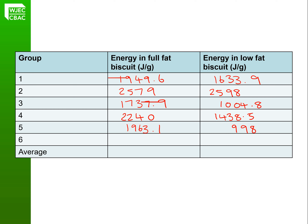Group 5 is 1,963.1 for the full-fat and 998 for the low-fat. Group 6: for the full-fat they had 2,579 and the low-fat 2,598. Pause the video and calculate the averages for these results. Our averages: for the full-fat we have 2,174.8, and for the low-fat is 1,711.9.